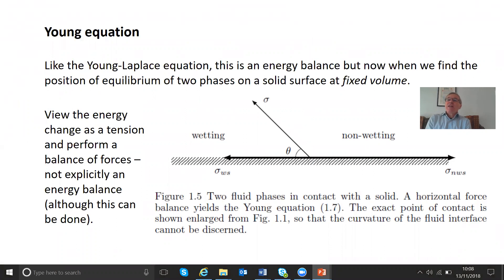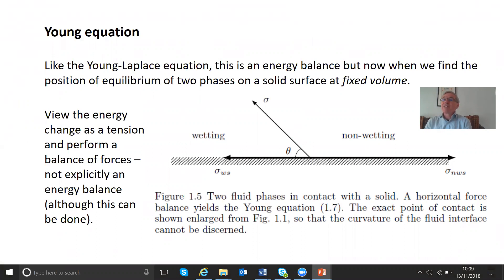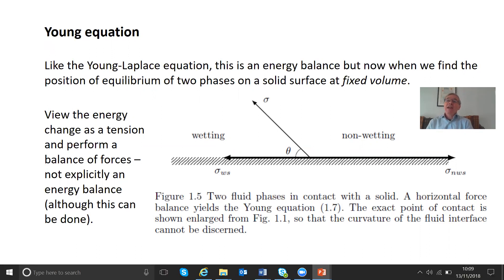It's an energy balance, but now we're going to find the position of equilibrium of two phases on a solid surface. We've introduced the solid, and this is going to be at fixed volume rather than fixed pressure. You can take a fixed volume of fluid on a surface and find the arrangement that minimizes the energy — it's just a bit more complex. The key physical insight from Thomas Young is to view it as a tension.